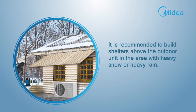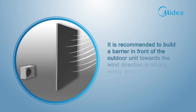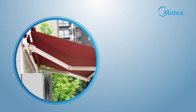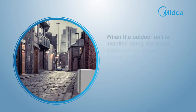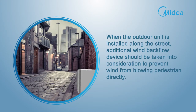It is recommended to build shelters above the outdoor unit in areas with heavy snow or heavy rain. Build a barrier in front of the outdoor unit towards the wind direction in strong windy areas. Choose a position with good ventilation but sheltered from rain and direct sun exposure if possible. When the outdoor unit is installed along the street, an additional wind backflow device should be considered to prevent wind from blowing pedestrians directly.